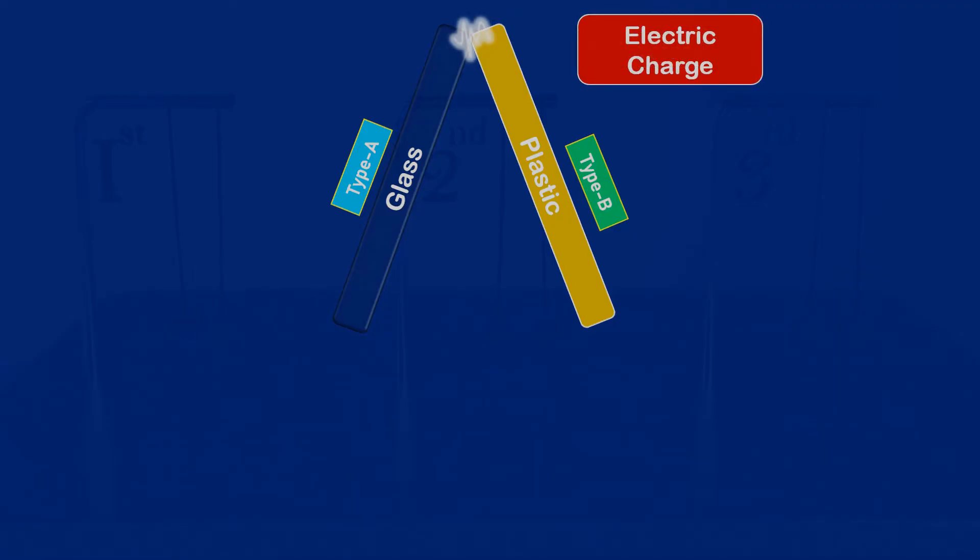With this spark, charges on both the bodies destroy and bodies become neutral. This process of loss of charge in bodies is called discharging. Due to discharging, both the bodies become neutral and the charges created in them get destroyed.